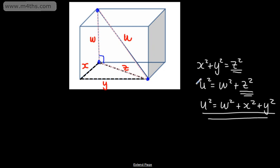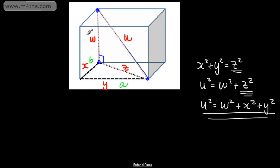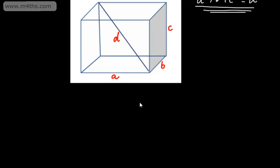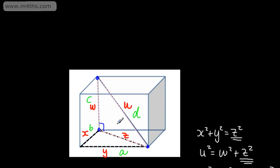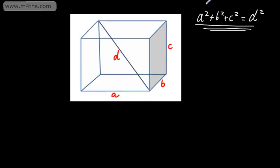If we now go back to looking at this in terms of A, B, C, and D: this one would be A, this one would be B, this one would be C, and we can see that D would be U. So we've got Y squared plus X squared plus C squared - which is W squared - equal to U squared, which gives us D. So in general, A squared plus B squared plus C squared is equal to D squared when finding the diagonal of a cuboid.